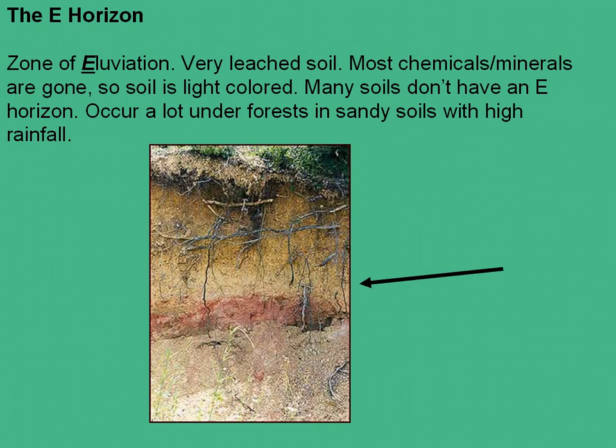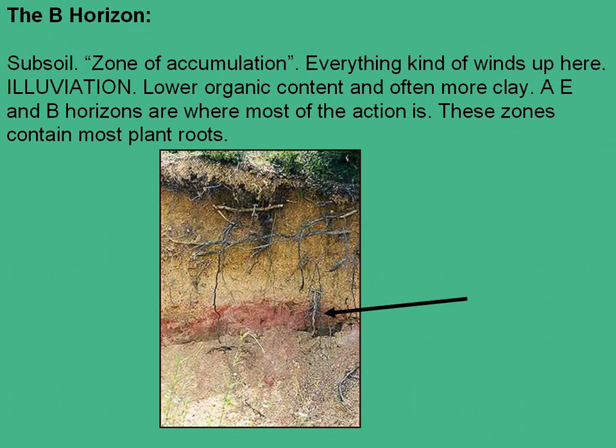The B-horizon, also referred to as the subsoil, is called the zone of accumulation. This is the area where everything ends up through illuviation. You do have a much lower organic content, as most of the organic content is in those upper layers. But you end up with more clay, as the smaller particles have trickled down to this area. The A, E, and B-horizons make up the area where most of the root action and nutrient cycling go on, and these zones contain the most plant roots.